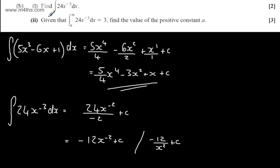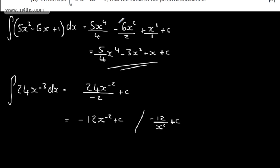In the second part, for three marks, it says given that the integral from A to infinity of 24x to the minus 3 dx is equal to 3, find the value of the positive constant A.